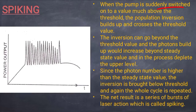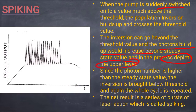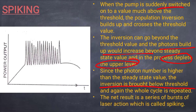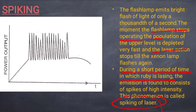If the pump is suddenly switched on above threshold, the population inversion builds up and crosses the threshold value, causing photon build-up beyond the steady state value, which depletes the upper level. Since the photon number exceeds the steady state, the inversion is brought below threshold, and the whole cycle repeats, resulting in a series of bursts of laser action — which is called spiking.